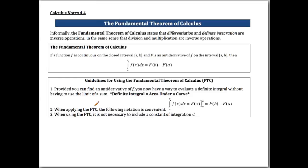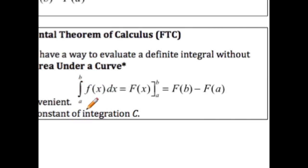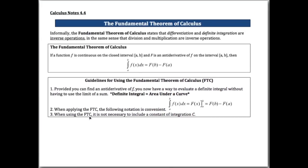When applying the fundamental theorem of calculus, the following notation is convenient: the definite integral from a to b of f(x) dx equals capital F of x evaluated from a to b, which denotes the antiderivative evaluated at b minus the antiderivative evaluated at a. When using the FTC, it's not necessary to include the constant of integration C, because it would get subtracted away — F(b) has a +C and F(a) has a +C, and they cancel.